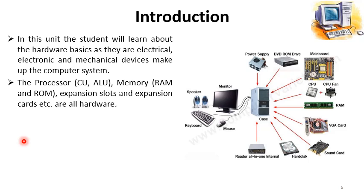The processor consists of two main components: CU (Control Unit) and ALU (Arithmetic Logic Unit). Different types of memory are in the computer system — the main types are RAM (Random Access Memory) and ROM (Read Only Memory). We will also discuss expansion slots and expansion cards, their functions, and why they are used inside the computer system.